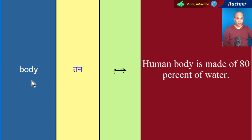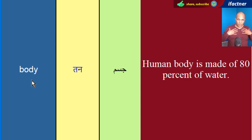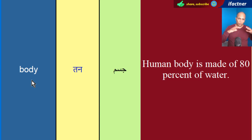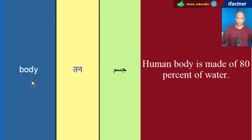B-O-D-Y, Body. Jisem ko kehtae hai — Jisem. Insan ki body, Human body, Insan ka jisem. Ya kooi bhi jisem — gaadi ka jo dhancha hota hai, gaadi ka sancha hota hai, us ko bhi body kaha jata hai. Jisem.